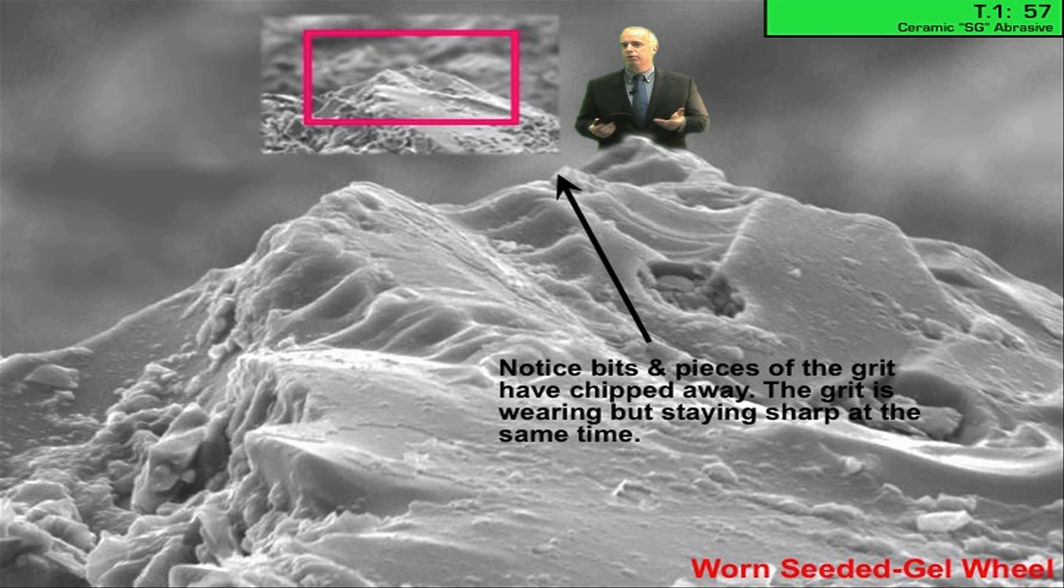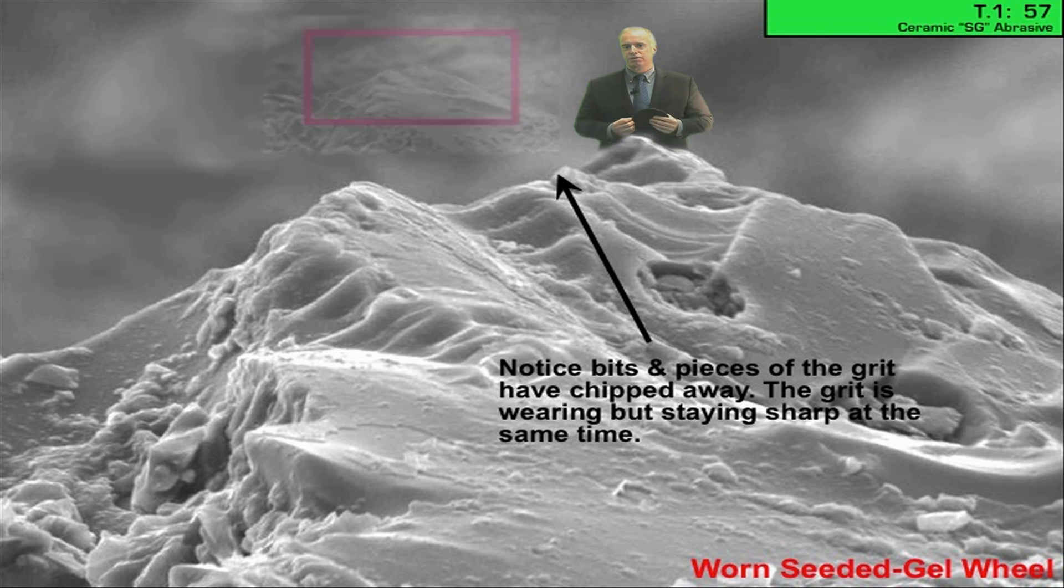Now, as we know, how do we be more aggressive in grinding? How do we have a bigger chip thickness? Slow down your wheel speed, increase your feed rate, or take a deeper depth of cut. Any of those or all of those or some combination will put a bigger force on your grits and get those guys to self-sharpen better.